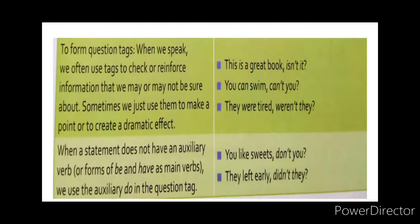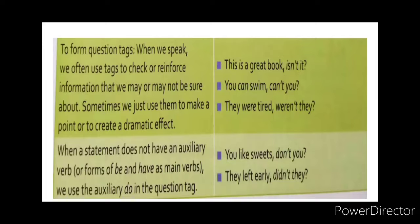The next function is to form question tags — for example, 'isn't it,' 'can't you,' 'weren't they.' When a statement does not have an auxiliary verb or forms of 'be' and 'have' as main verbs, we use the auxiliary 'do' in the question tag. So when forming a question tag without an auxiliary verb in the form of 'be' or 'have,' we write 'do' — for example, 'don't you,' 'didn't they.'